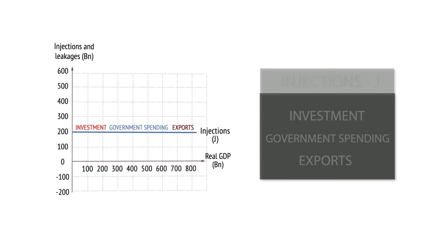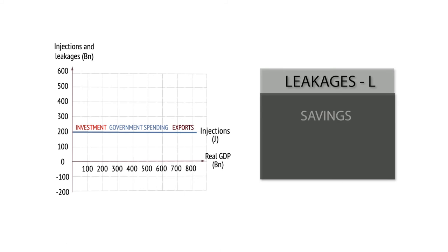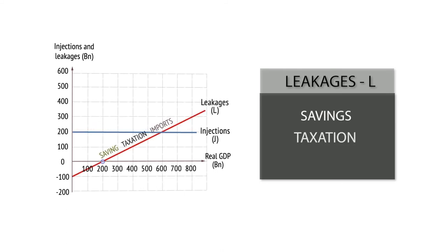Leakages include household savings, taxation, and import spending. These are dependent on current GDP, hence the line is upward sloping. Equilibrium exists when injections equal leakages, at point A and Y at $600 billion.